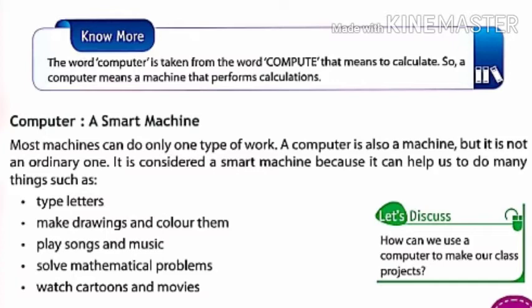You know, we call a computer a smart machine. Why do we call it this? We will study it. Most machines can do only one type of work. Many machines are like this, which do only one job. A computer is also a machine, but is not an ordinary one. It is considered a smart machine because it helps us to do many things.